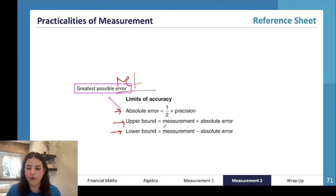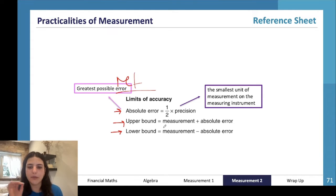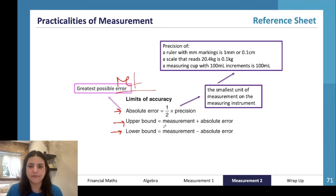So absolute error is the greatest possible error mathematically that could have occurred while measuring something. The precision is the smallest unit of measurement on the measuring instrument. So let's say a ruler that goes to millimeters - the precision is going to be one millimeter. If a scale reads to 20.4 kilograms, the precision is 0.1 kilograms. If a measuring cup goes by 100 mils, then the precision is 100 mils. Let's say the scale only goes to 21, 22, 23, 24, it only goes up by one kilo - our precision would be one kilogram.